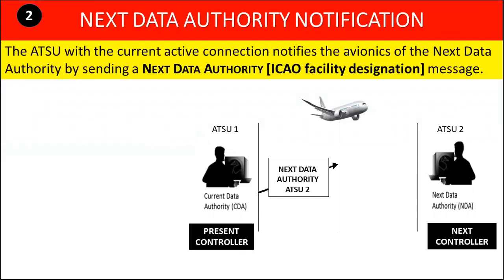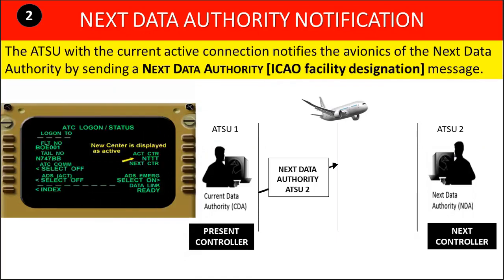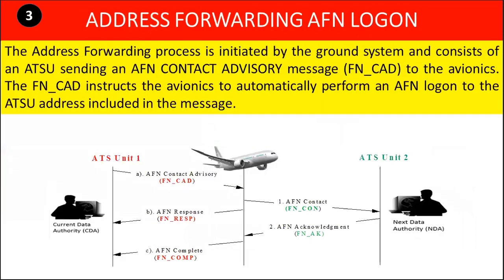The ATSU with the current active connection notifies the avionics of the next data authority by sending a next data authority message. The purpose of this message is to advise the avionics of the next air traffic service unit to become the data authority. The present controller, known as the current data authority, is the transferring unit that designates the next data authority. This reduces the possibility of logging on to an improper data authority, similar to switching to the wrong radio frequency in voice communications. The address forwarding process is invisible to the flight crew, though the crew does receive an indication of a change to the active ATS unit following a successful CPDLC connection transfer.